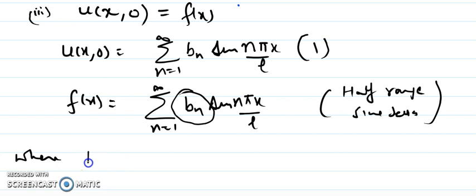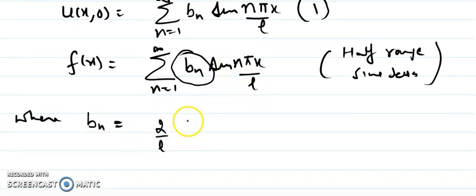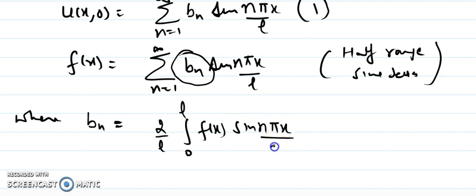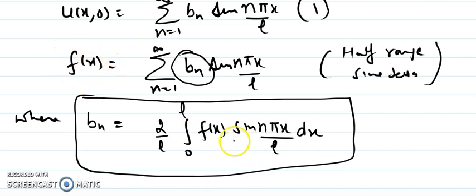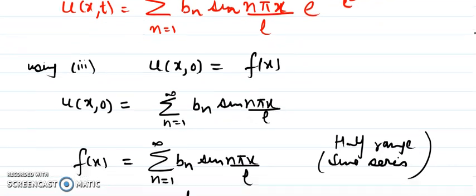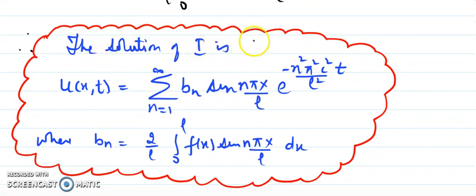We know how to find the constant of a half-range sine series. With bar length l, the coefficient bₙ is given by: bₙ = (2/l) · ∫₀ˡ f(x) · sin(nπx/l) dx. Using this Fourier sine series formula, plug in the given function f(x) and integrate to get bₙ. The final solution of the heat equation with boundary conditions at zero is: u(x,t) = Σ bₙ · sin(nπx/l) · e^(−n²π²c²t/l²), where bₙ = (2/l) ∫₀ˡ f(x) sin(nπx/l) dx.